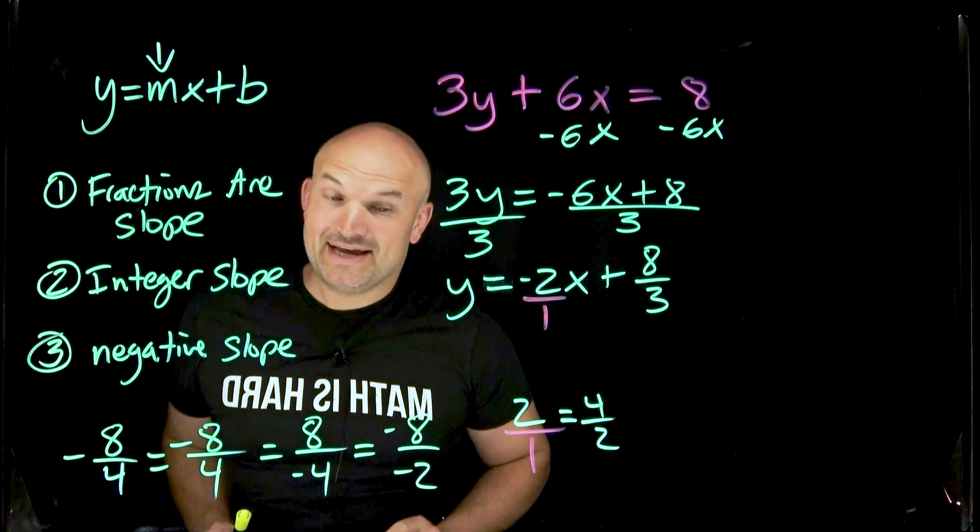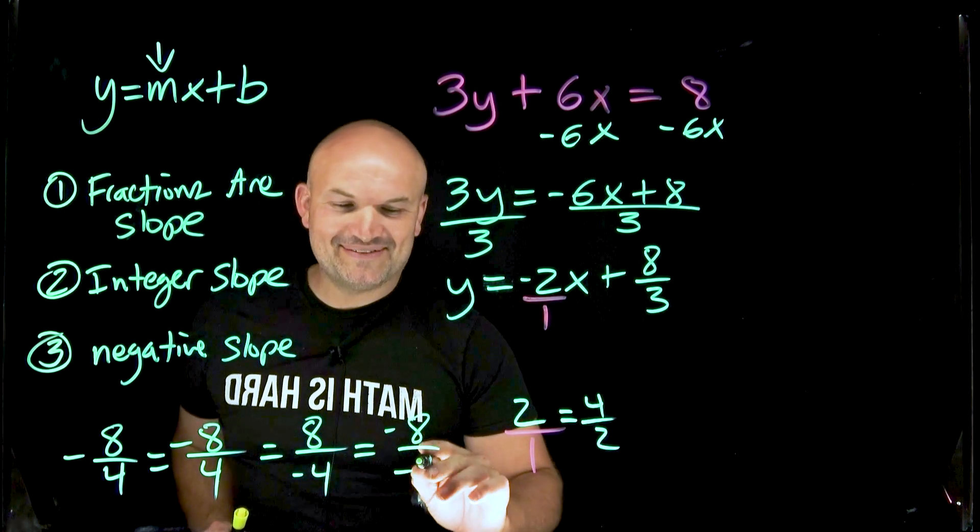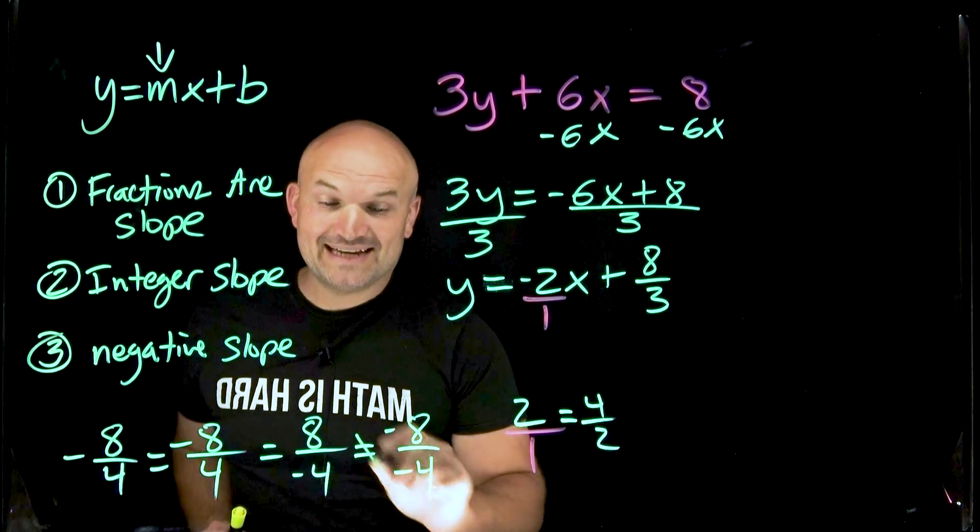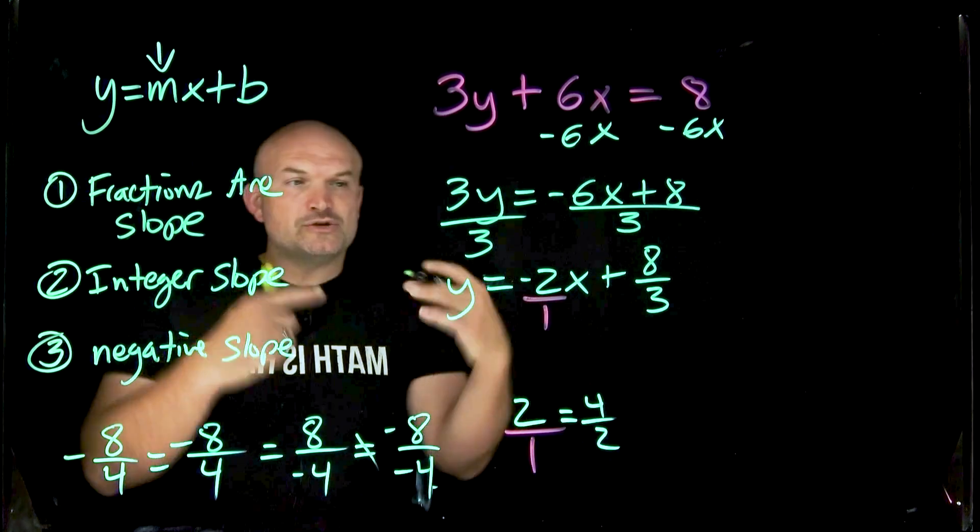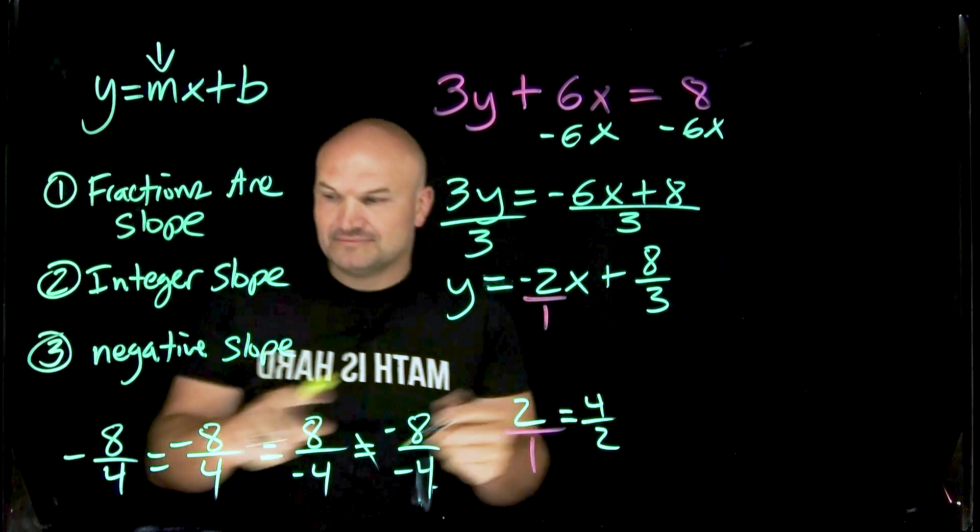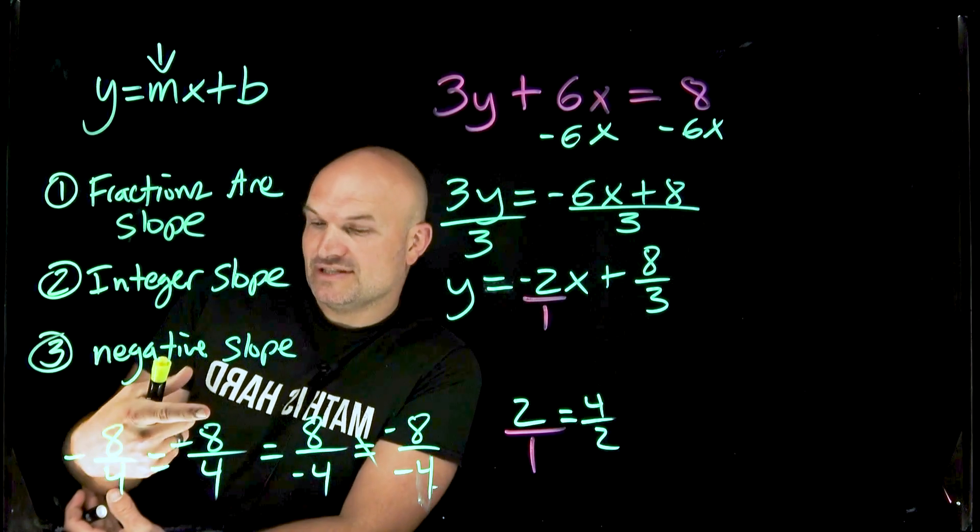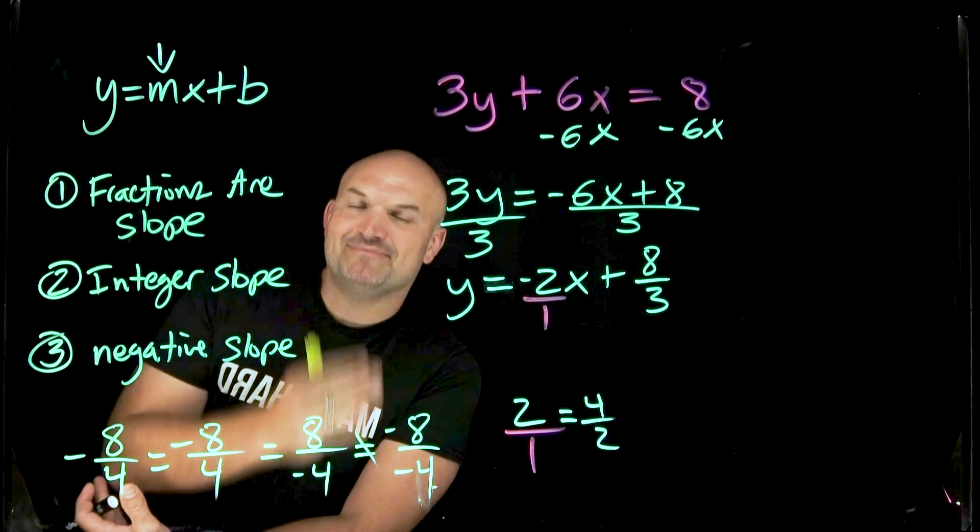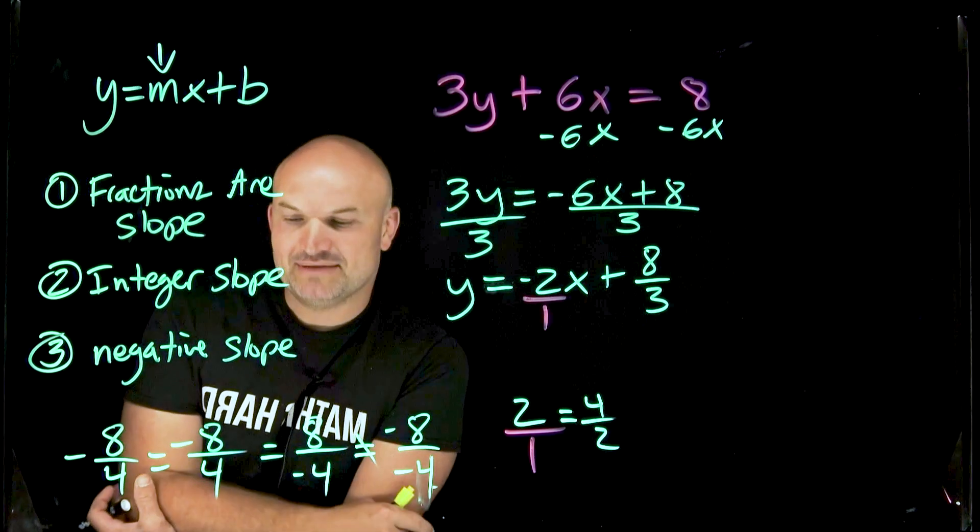What about if I took a negative 8 over a negative 4? That's going to equal to a positive 2. So when you have a negative in front, like here, you can apply the negative to the top. You can apply the negative to the bottom. Just don't apply it to both the top as well as the bottom.